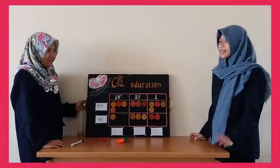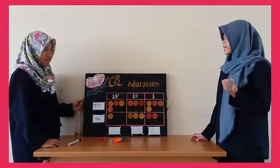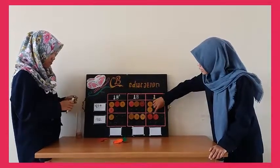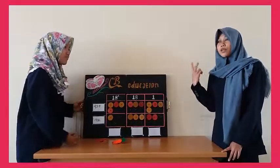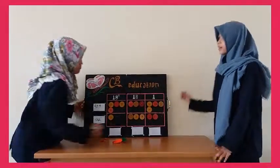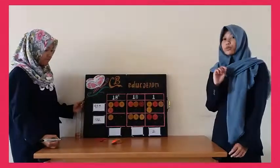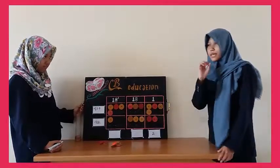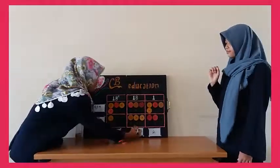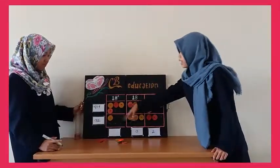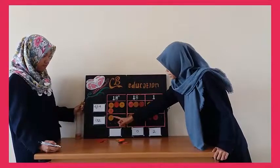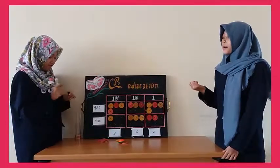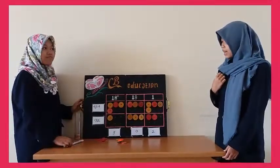Setelah itu kita melakukan pengurangan seperti biasanya, dimulai dari satuan: ada empat chips dikurangkan dengan dua chips, hasilnya dua chips — berarti hasilnya adalah dua pada kolom satuan. Begitupun pada kolom puluhan: ada tiga chips dikurangkan dengan tiga chips, hasilnya adalah nol chips, maka kita tulis dengan angka nol. Dan yang terakhir pada kolom ratusan: ada empat chips dikurangi oleh satu chips, hasilnya adalah tiga chips. Jadi, hasil dari 434 dikurangi 132 adalah tiga ratus dua.